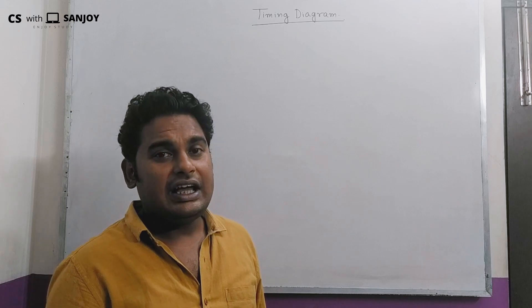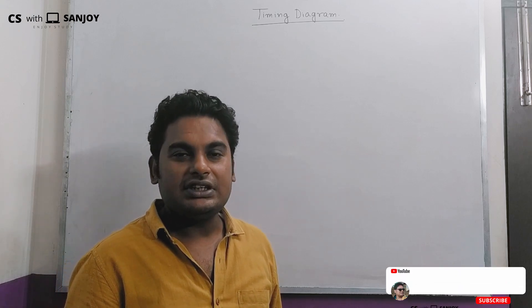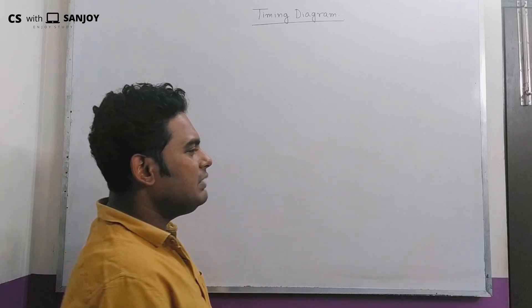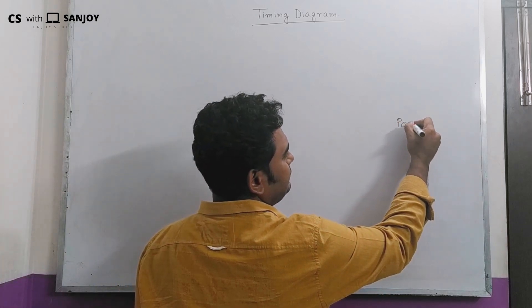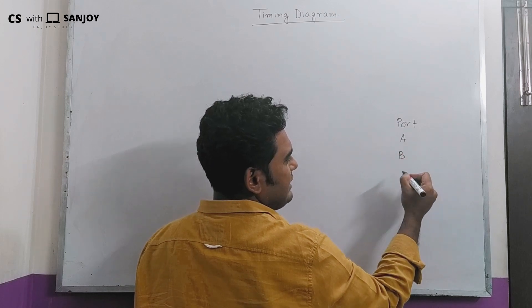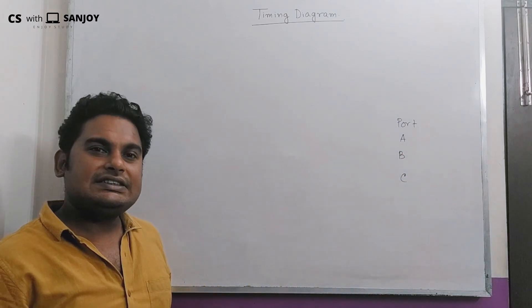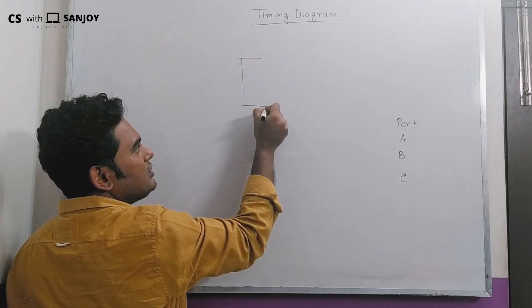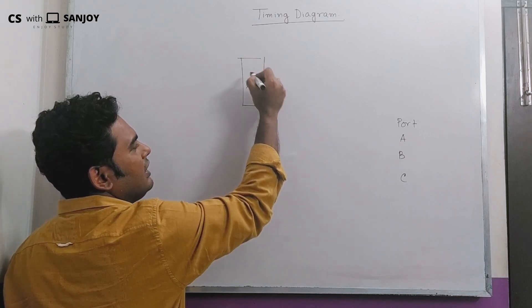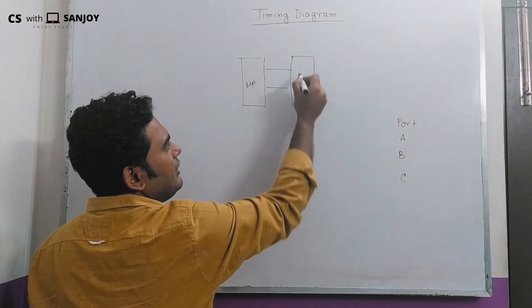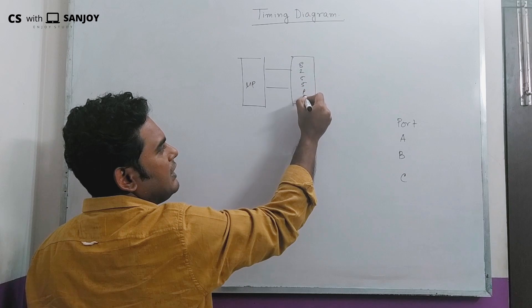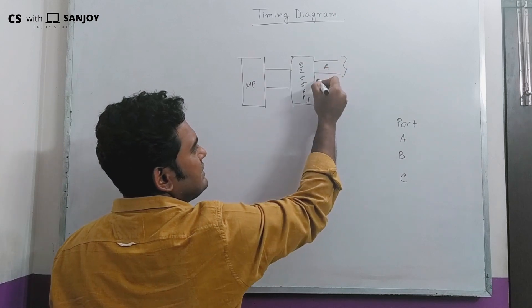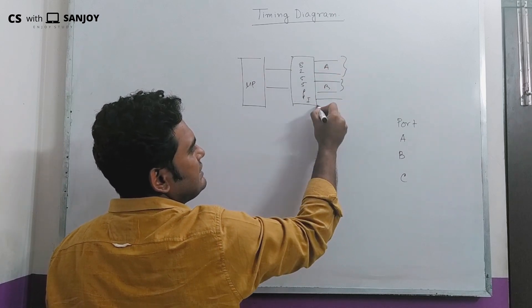There are three ports: Port A, Port B, and Port C. You can access the external peripheral devices through the 8255 PPI. The microprocessor is connected to the 8255 PPI, and the 8255 PPI communicates with the external devices through Port A, Port B, and Port C.